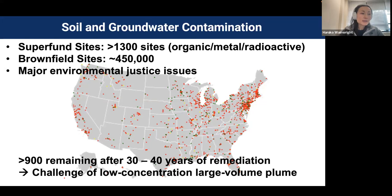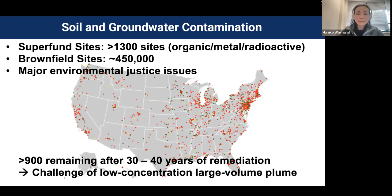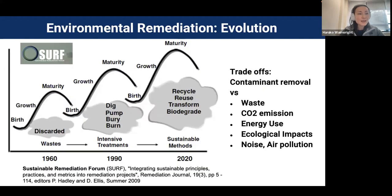Often these are major environmental justice issues, frequently associated with low-income disadvantaged communities. The US has a 30-40 year history of cleanup and remediation, but we are finding that it is challenging to remediate low-concentration, large-volume plumes because at low concentration the treatment is no longer effective, but we can't remove all the soil. Environmental remediation cleanup is a relatively new field — it started in the 1980s after environmental regulations were established.